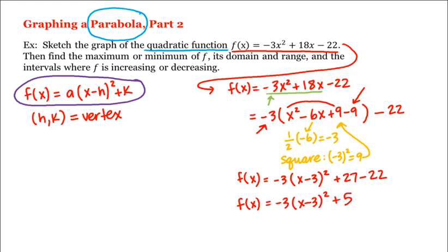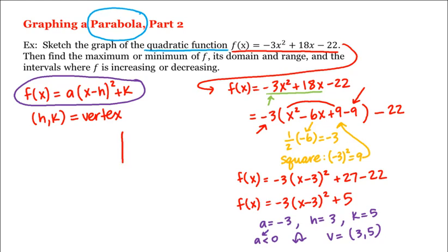Comparing to vertex form, we see a = -3, h = 3, and k = 5. Since a is less than 0, our parabola opens downward, and our vertex is at (3, 5). Let's plot the vertex on the axes: going over to x = 3 and up to y = 5.